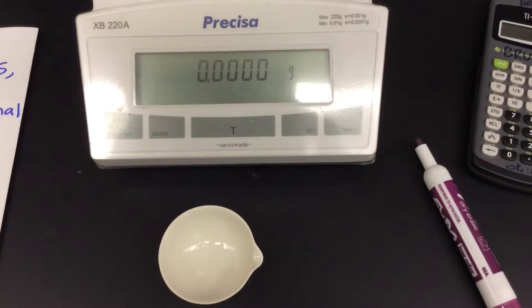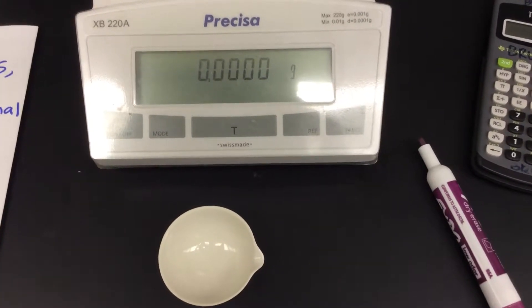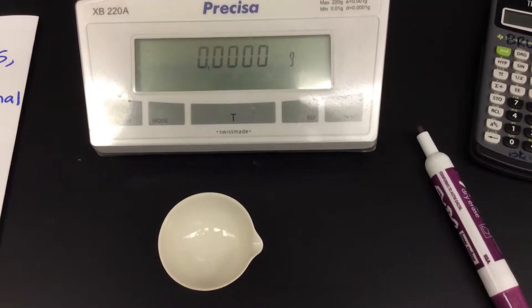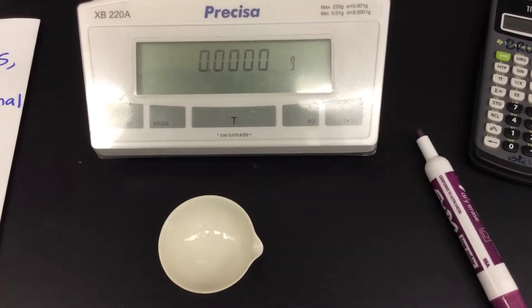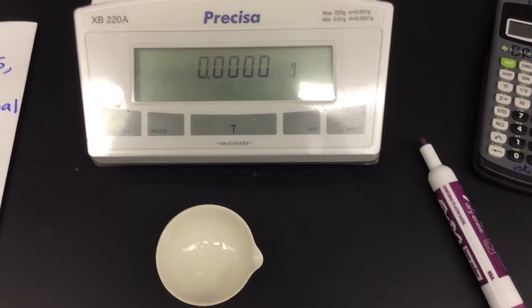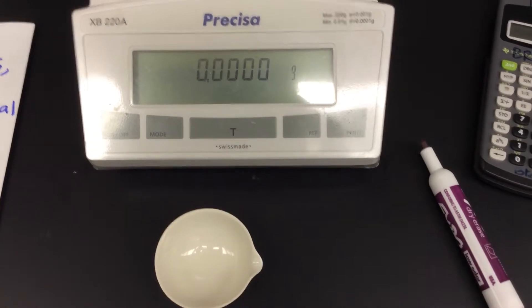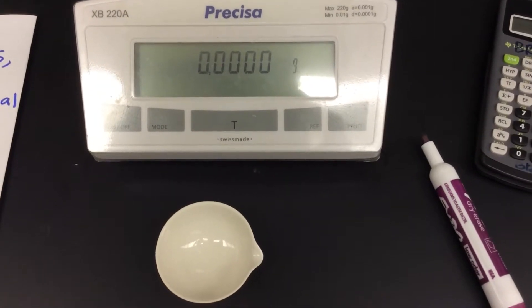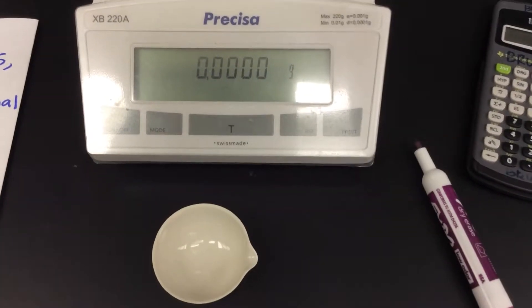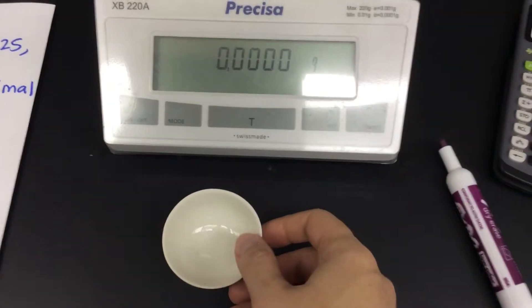In this video we will explore the effect of significant figures and how significant figures impact our calculations. So we're going to calculate the density of water. Now this is tap water. I'm not using deionized water. We're not going to get too obsessive about that. We're just going to use some tap water. And we can see how dense the tap water here in the city is.